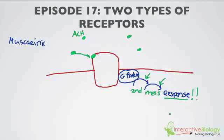So those are the two types of receptors — we have the nicotinic receptor, and we have the muscarinic receptor. If you have any questions about this, you can leave them in the comment section below, or leave a comment letting me know what you think about the format and give suggestions for future episodes. That's it for this video, and I'll see you on the next one.